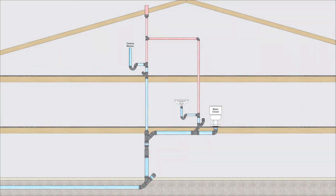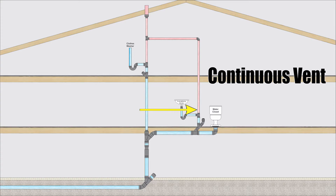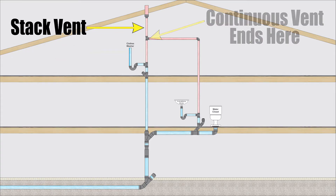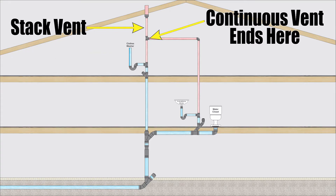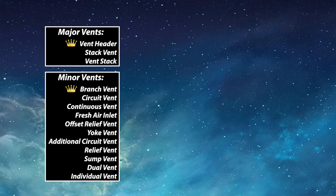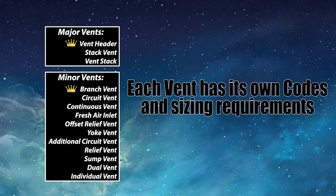To illustrate this: in this picture I have a continuous vent coming off the bathroom group, and it comes up and joins into a stack vent. The resulting vent pipe that goes up will still be a stack vent, and that continuous vent will end right at the junction. For every single major and minor vent that we come across, there are a number of different code requirements and sizing tables that we may need to use to size them.